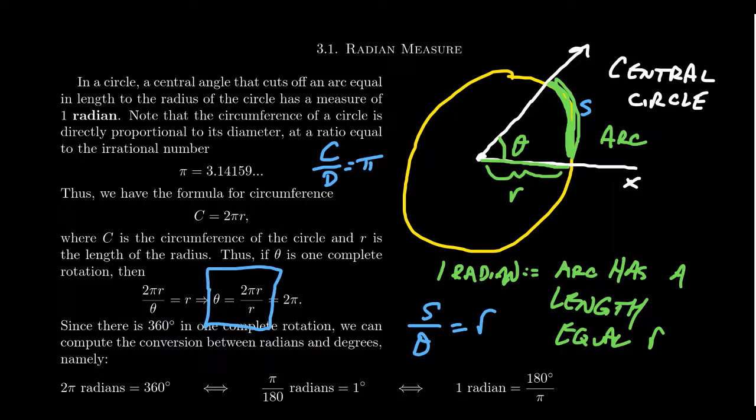Theta equals 2πr over r. But since there's an r on top and bottom, they cancel out, and we end up with theta equals 2π. So what this tells us is this gives us a baseline: one complete rotation, one complete revolution of a circle in the radian measure is equal to 2π.